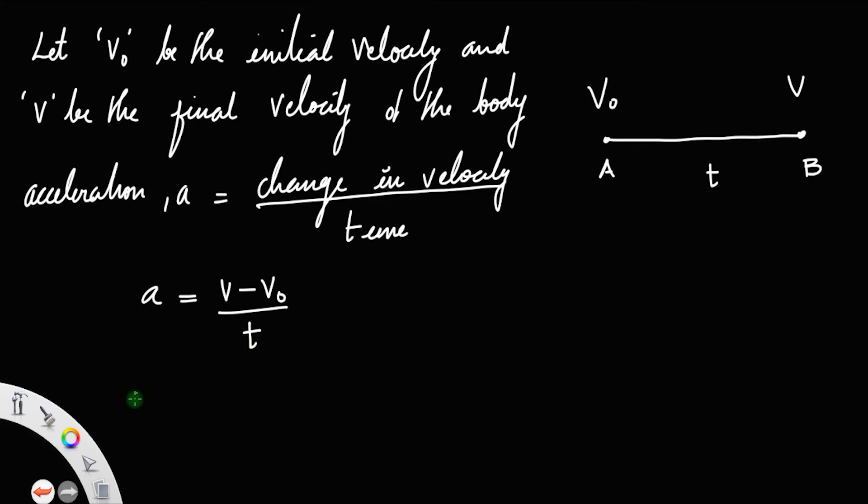Taking t to the left, we get at = v - v0, or v - v0 = at.